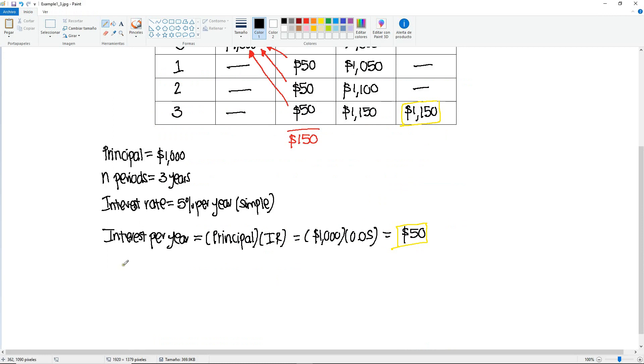So here, if you want to know the total interest, you would just do the principal times the interest rate times n periods, which is going to be equal to 1,000 times 0.05 times 3, which gives you 150, the same that you have under the interest column when you add all three interest amounts in the three years.